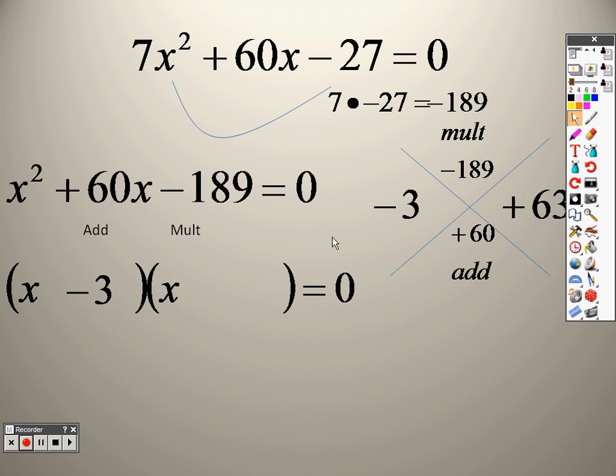So when I plug this in, it's x minus 3 and x plus 63. I slide by 7, so now I need to divide by 7. These have nothing in common, so there's nothing I can take out, but these, right, those have something in common.